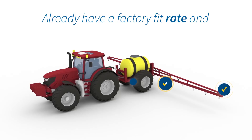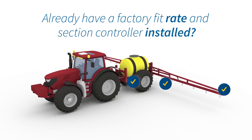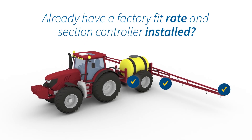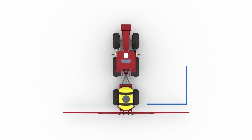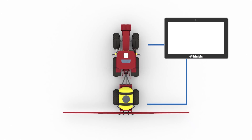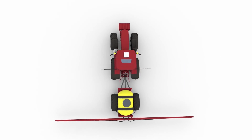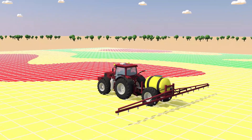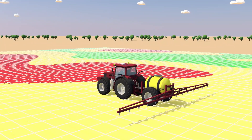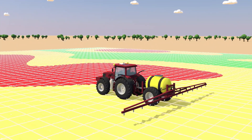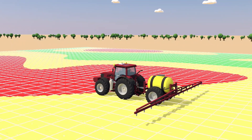Already have a factory-fit rate and section controller installed? Connect them to our industry-leading guidance displays with the Trimble Universal Variable Rate (TU VR) and Serial VR, or third-party protocols. And use Trimble prescription maps and analytics to automatically adjust target rates and automate section switching.